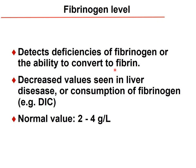When fibrinogen levels are suspected to be decreased — for example in liver disease or DIC (disseminated intravascular coagulation) where the body consumes fibrinogen — it can be measured directly. The normal fibrinogen value is between 2 and 9 g per liter.